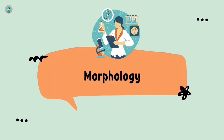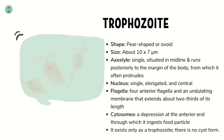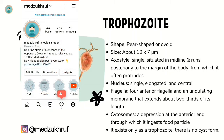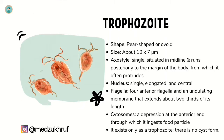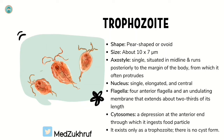First we will discuss the morphology of Trichomonas vaginalis. The trophozoite is the form of Trichomonas vaginalis. Its shape is pear or ovoid. Its size is about 10 by 7 micrometers. It has an axostyle situated in the midline that runs posteriorly to the margin of the body. It has a single elongated central nucleus, four anterior flagella, and an undulating membrane extending about two thirds of its length. The cytostome is a depression at the anterior end through which it ingests food particles. It exists only as a trophozoite — there is no cyst form.